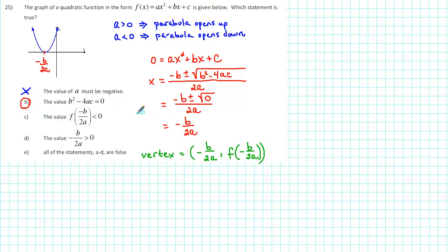So the statement, the value f(-b/2a) is less than 0, is saying that the y-coordinate of the vertex is negative. But what do we know about the vertex of our graph?